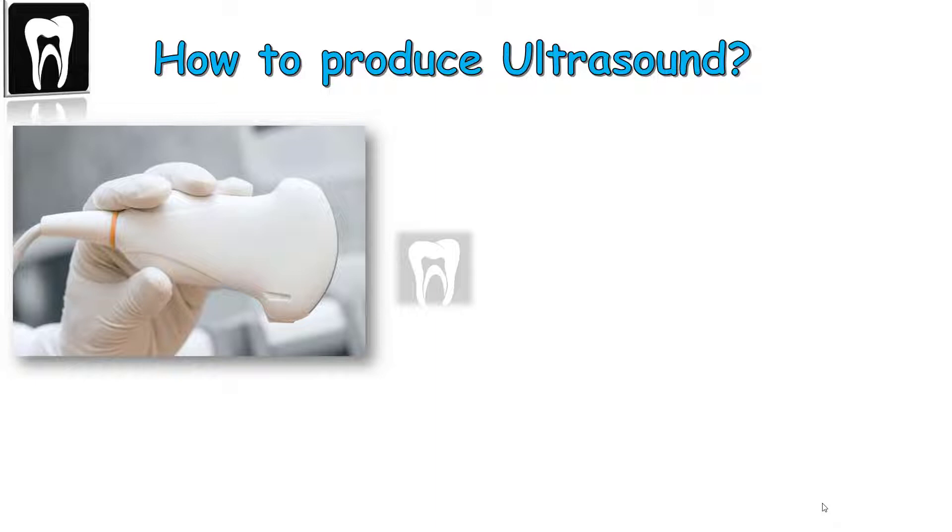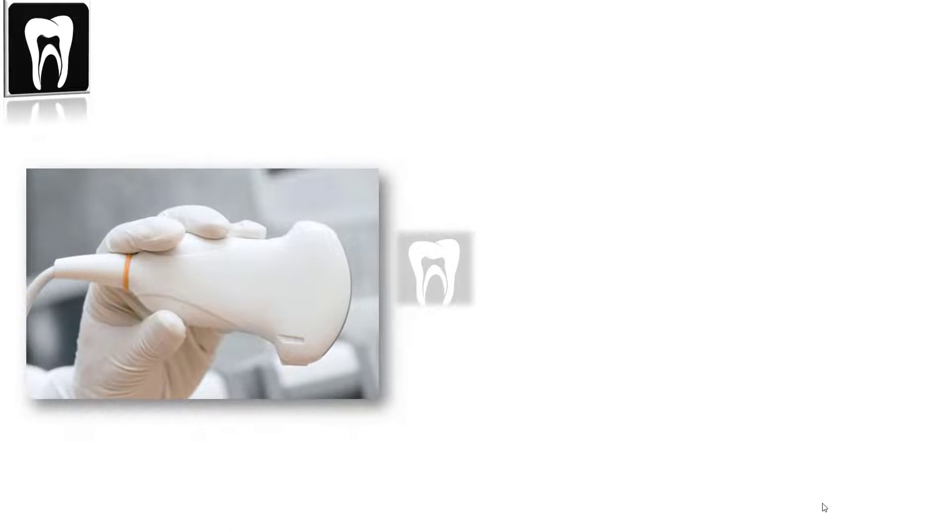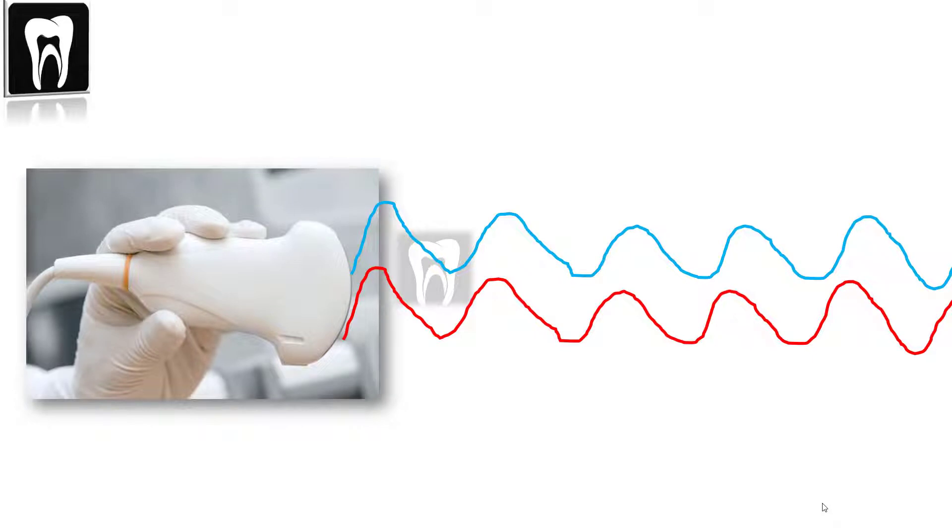This handpiece is called a transducer. It's placed against the body. The transducer sends a sound inside the body and receives the echo back from the body, just like the bat. And then the computer can use those sounds and build up an image.